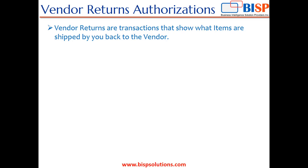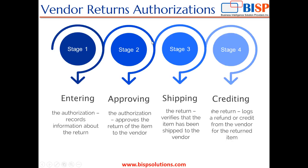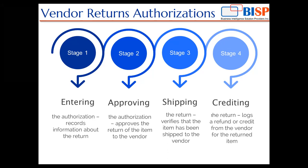The whole process flow of the vendor returns is divided into four stages. The first one is you are going to enter the return authorization. Entering the return authorization records all the information about the return such as the item number, description, quantity that is being returned, the value of the return, and the vendor RMA number. These are the things that are usually recorded when you are entering the return authorization. The second is approving the authorization.